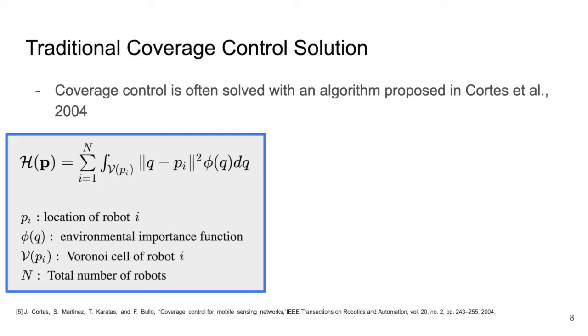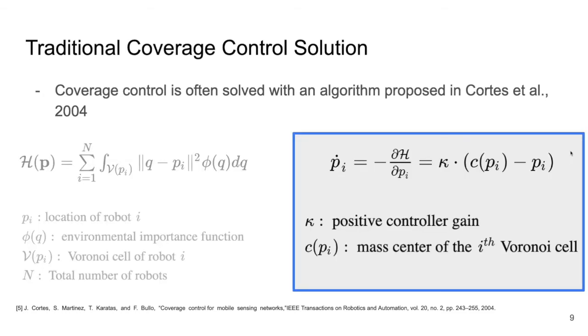Using the multi-robot farming example from earlier, the density function can be thought of as the ripeness of the crop in a given region of the farm. Naturally, if robots are harvesting, they would want to be closer to the ripe crop. So the cost function is weighted such that the robots are penalized the farther they are from the harvestable regions. Note, in this work we assume the density function is normalized to a probability density function. On the right is the controller derived from the spatial gradient of the cost function, where c of pi is the mass center of the i-th Voronoi cell, and kappa is a positive constant controller gain.